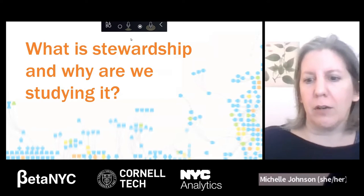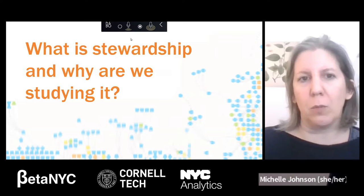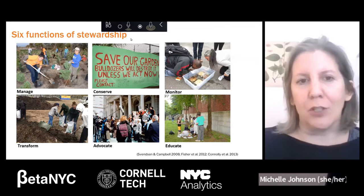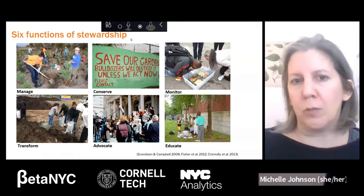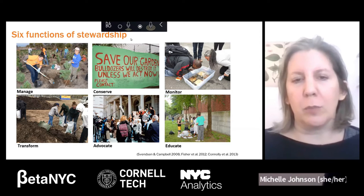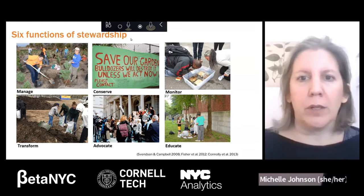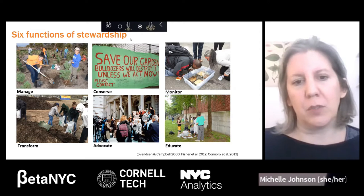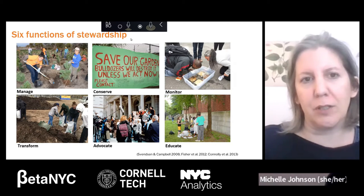Stewardship is taking care of the local environment — that's how our team defines it. There are six different functions that comprise our definition: managing the local environment, conserving (like land conservation or protecting a garden), monitoring (like monitoring for oysters with the Billion Oyster Project or counting trees), transformation (engaging with systems like waste or energy), advocacy, and environmental education.